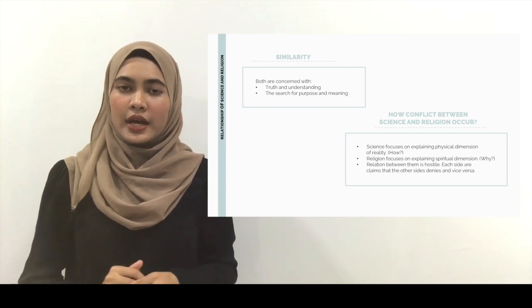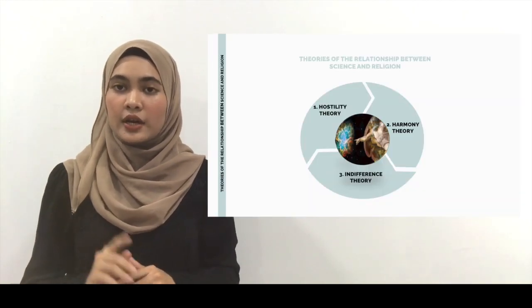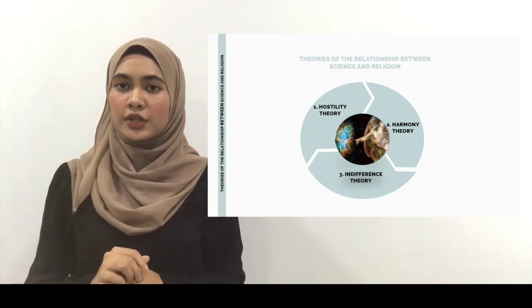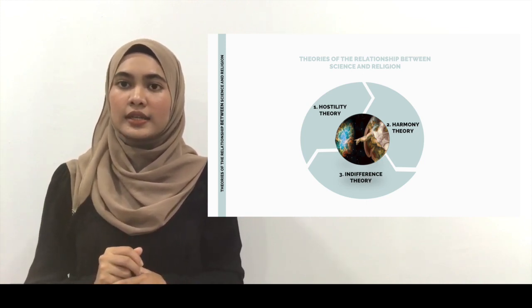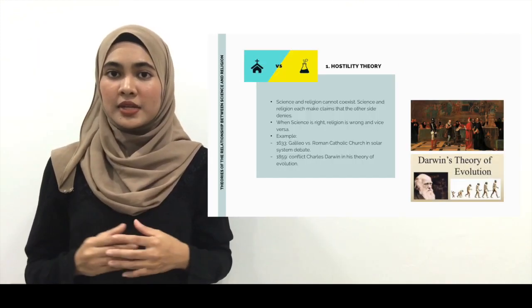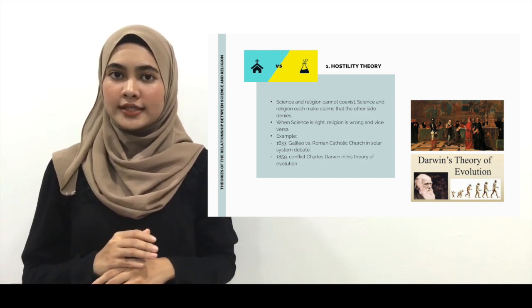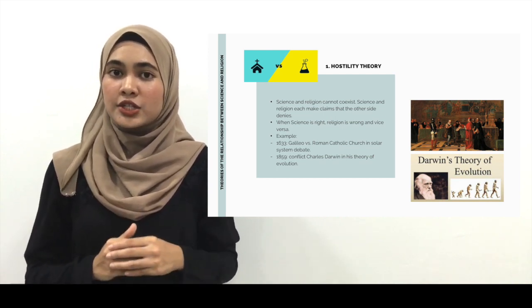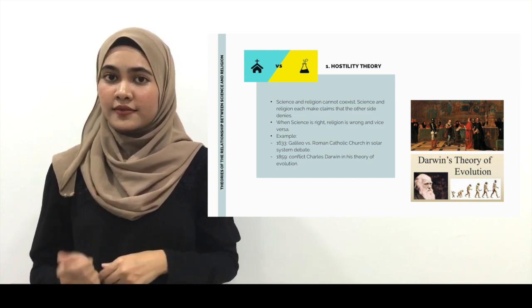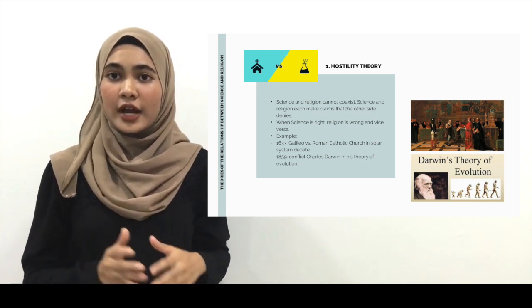There are three theories between science and religion. First, hostility theory. Second, harmony theory. And the last one, indifference theory. Hostility theory means that science and religion cannot coexist. Science and religion each make claims that the other side denies. When science is right, religion is wrong and vice versa.